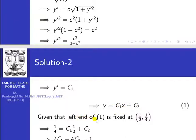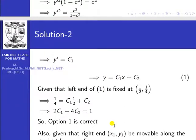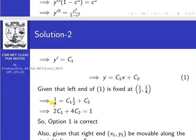Given that the left end of the extremal is fixed at (1/2, 1/4) — this extremal passes through (1/2, 1/4). When you substitute x equal to 1/2 and y equal to 1/4 into y equal to c1*x plus c2, and take the LCM, multiplying through by 4 gives: 1 equal to 2c1 plus 4c2. So 2c1 plus 4c2 equal to 1. This is Option 1, which is correct.